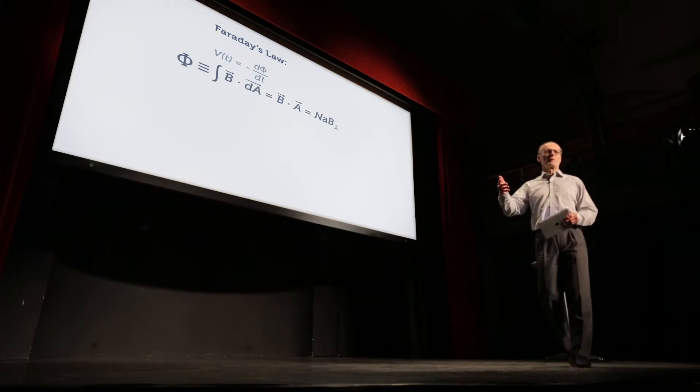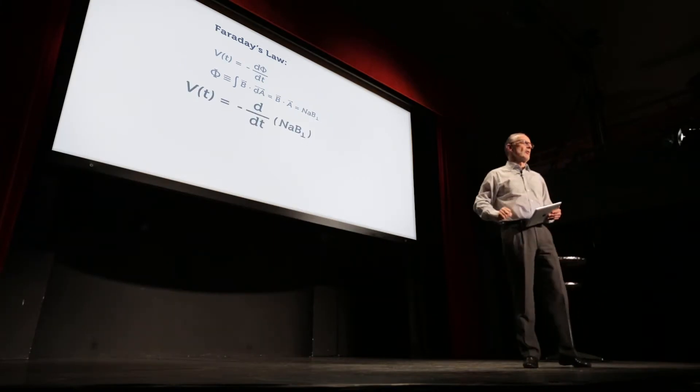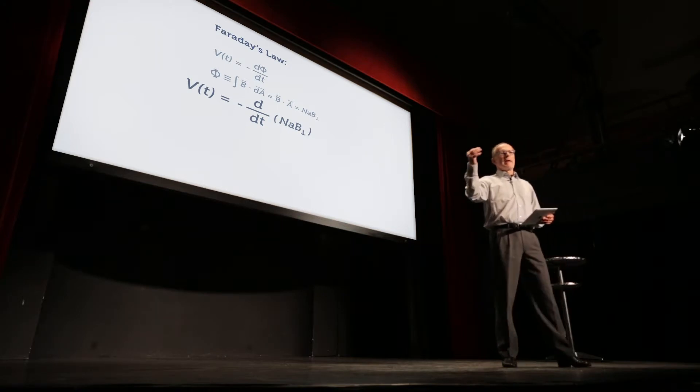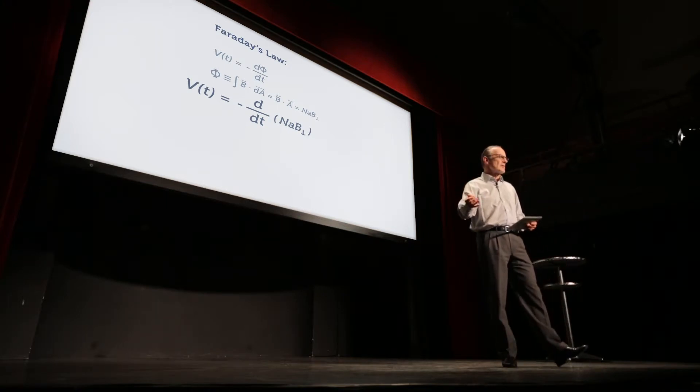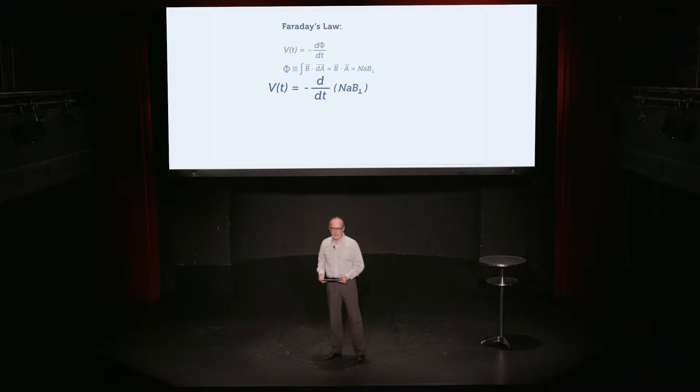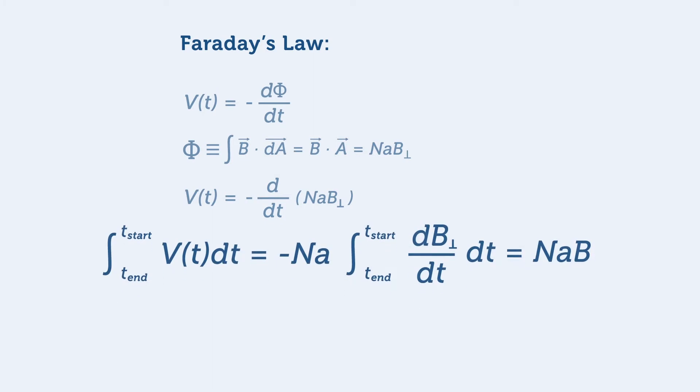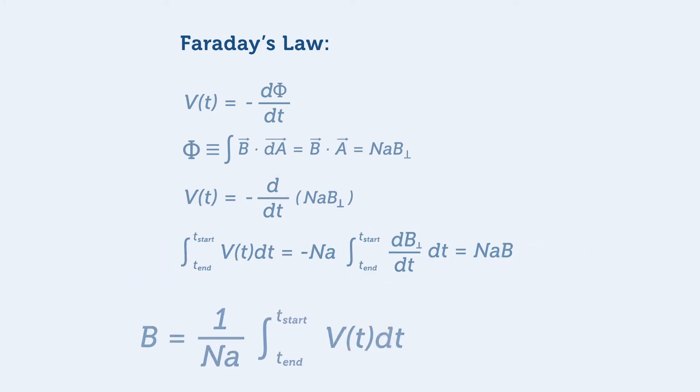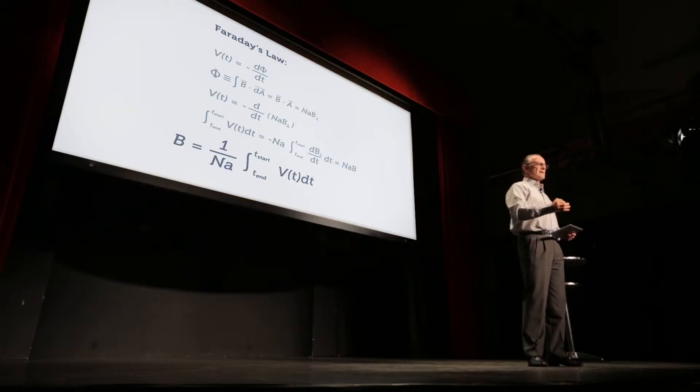Now, the expression for the voltage is just the time rate of change of all that. And since the area of the coil and number of turns is a constant, we hope, we can just factor those out. And what we're left with is just the time rate of change of the flux density. We do some cranking, and the next couple of lines show you we take the integral to get rid of that derivative.